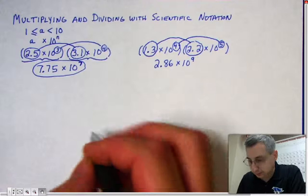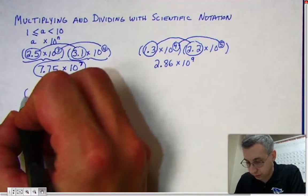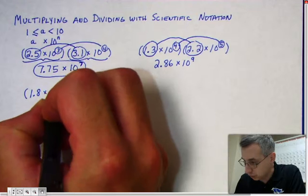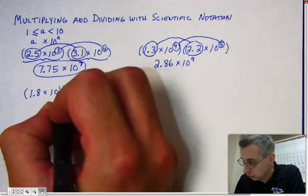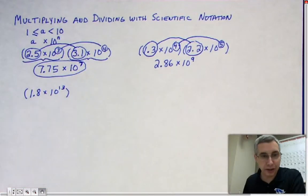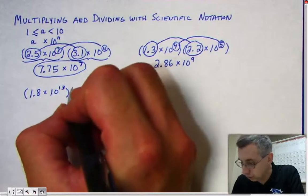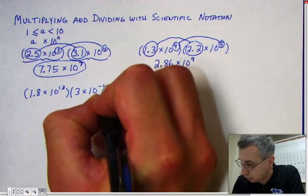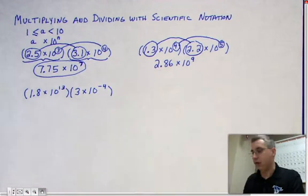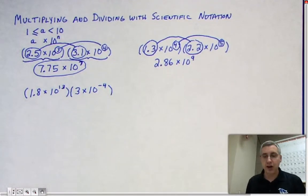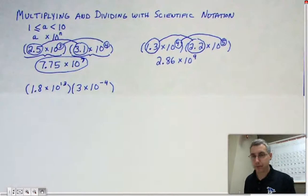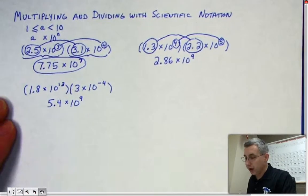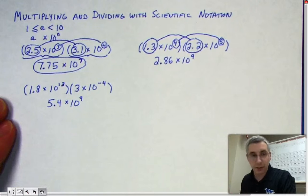Let's try another one. That's 1.8 times 10 to the thirteenth times 3 times 10 to the negative fourth. Please press pause and try that one. You should have 5.4 times 10 to the ninth.